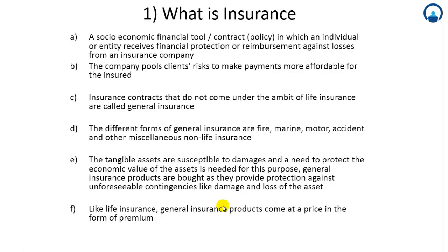All these factors act as a guide to the insurance company, wherein unforeseeable contingencies like damage and loss of an asset — in this case the economic value of the asset — determine whether it is considered a damage or loss of value. The insurance value or life of a tangible asset may be greater or lesser depending on these factors.